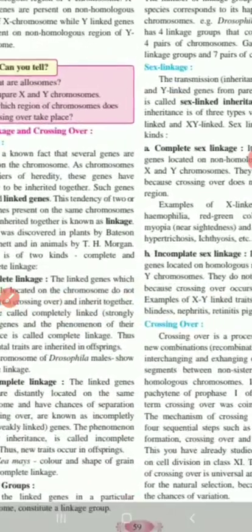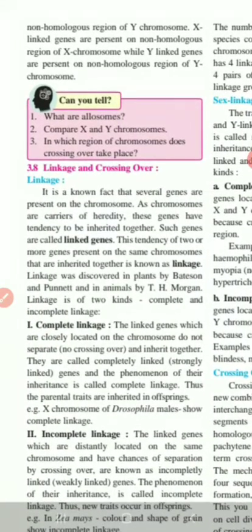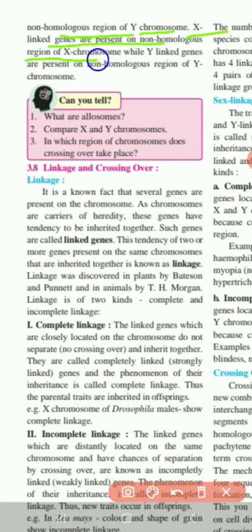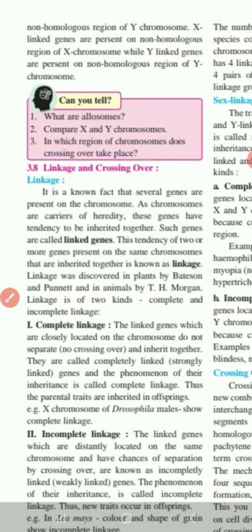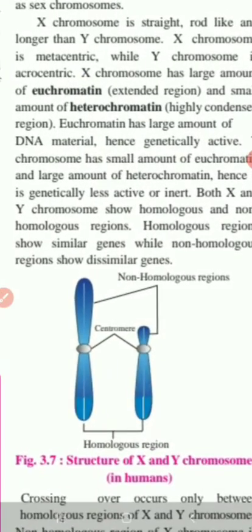The non-homologous region of X chromosome is large as compared to that of Y chromosome. X-linked genes are present on the non-homologous region of X chromosome, while Y-linked genes are present on the non-homologous region of Y chromosome.